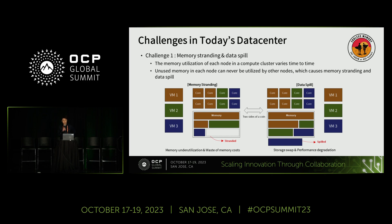The first challenge is that the memory utilization of the compute cluster varies over time based on the workload size. But due to the inflexible nature of cloud hardware platforms, as shown on the left figure, some memory resources may underutilize, leading to memory stranding. Memory is a costly resource in today's data center, so memory stranding due to over-provisioning causes significant resource waste.